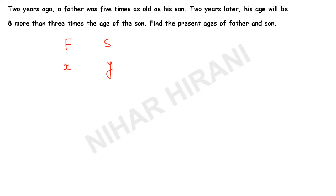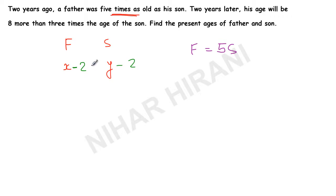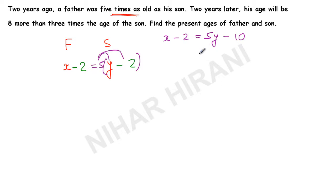Statement one says two years ago, so before two years their ages must be two less than the present age. Now I want to make the equation — father was five times as old as his son two years ago, it means father equals five times son. So I will write: x minus two is equals to five times y minus two, which gives x minus two equals five y minus ten. Now this will be x equals five y minus eight, and this is my equation one.